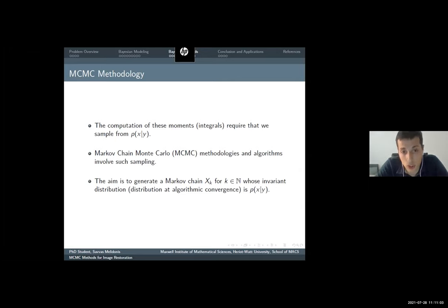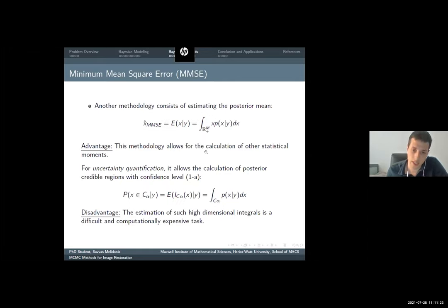The other thing that we can do, according to the central limit theorem, is that we can compute these integrals by using samples from the posterior. And MCMC methodologies, Markov chain algorithms, can enable such sampling. Our aim is to generate a Markov chain, whose invariant distribution is the posterior, and this Markov chain should be ergodic, so that we can approximate these integrals by using sums.